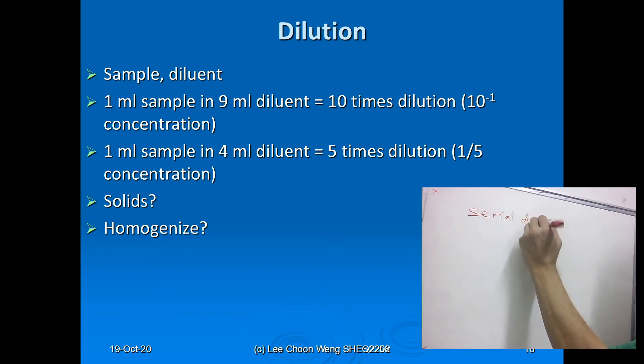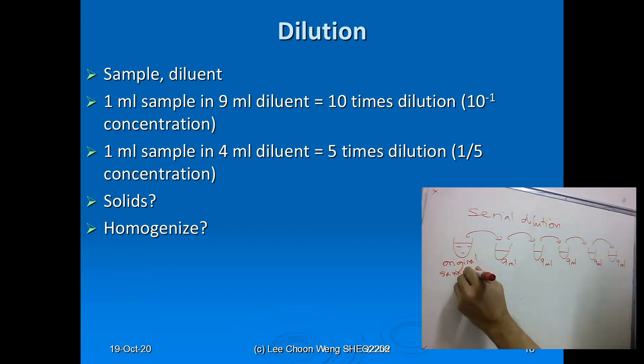We do not dilute the sample only once. Instead, we dilute it over a series, usually of the same approach. This is the original sample. You are placing 1 ml of the sample in 9 ml diluent. Mix it well - that is important. Mix it well before transferring another 1 ml, and so on and so forth.